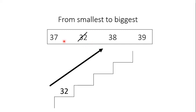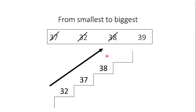Next, here we have 3 numbers: 37, 38, and 39. So the second digits are 7, 8, and 9. Which number is the smallest? Yes, it's 7. So 37 will be the next number. Okay, here we have two numbers left: 38 and 39. So we will see the second digit, 8 and 9. Which number is smaller, 8 or 9? 8 — so 38. We will write 38 on the next step. And at the end, 39 is the only number left. That's the end.